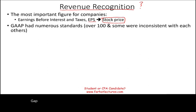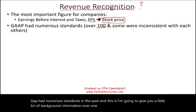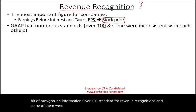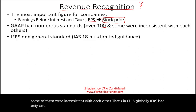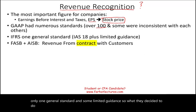In the past, GAAP had over 100 standards for revenue recognition, and some of them were inconsistent with each other. That's in the U.S. Globally, IFRS had only one general standard and some limited guidance. So they decided to combine and create one unified set of revenue recognition standards for both U.S. GAAP and IFRS.